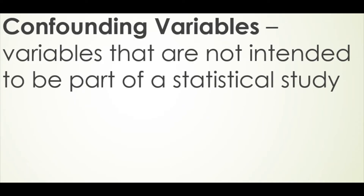Confounding variables are variables that are not intended to be part of a statistical study. In our exercise and weight loss example, exercise was the variable of interest. But there could be confounding variables — for instance, some people in the study might also be going on a diet, or compensating by eating more calories than they burn. That would be a confounding variable, and it could affect how we interpret the results.